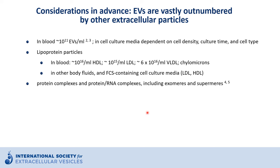There are about 10 to the 11th extracellular vesicles in blood. In culture media this may vary based on cell density, culture time, and cell type. It is important to realize that extracellular vesicles are often in the minority compared to other types of extracellular particles. For example, VLDL in blood occurs at about 10 to the 16th particles per ml — almost a million times more than extracellular vesicles. There is about 100,000-fold more HDL and about 10,000-fold more LDL than extracellular vesicles.